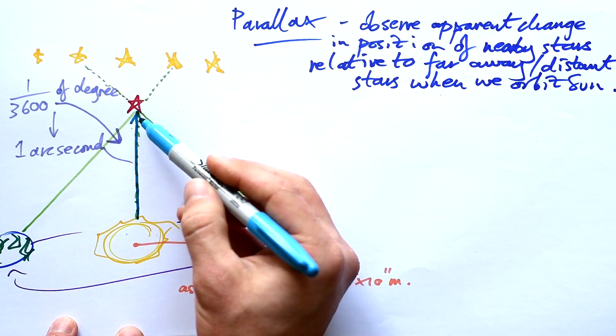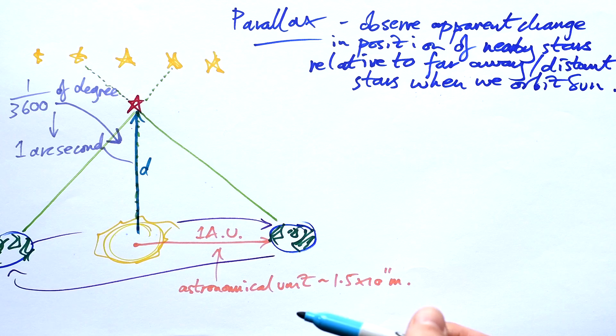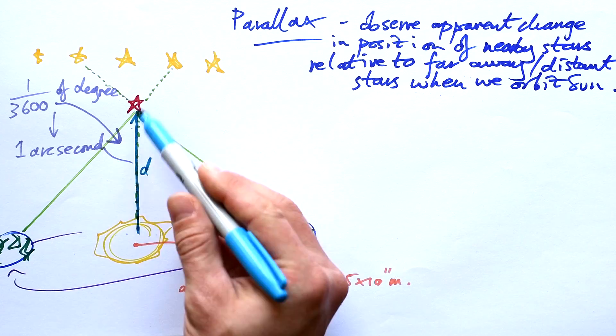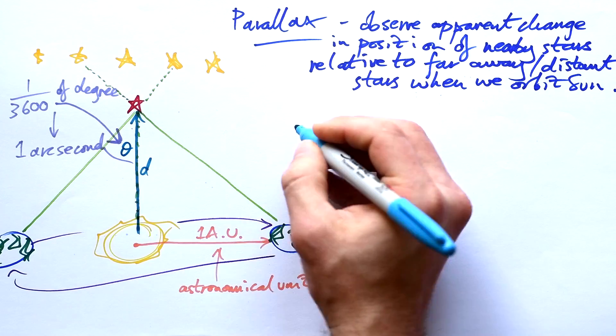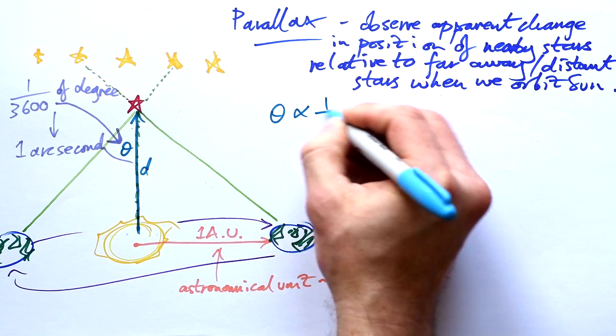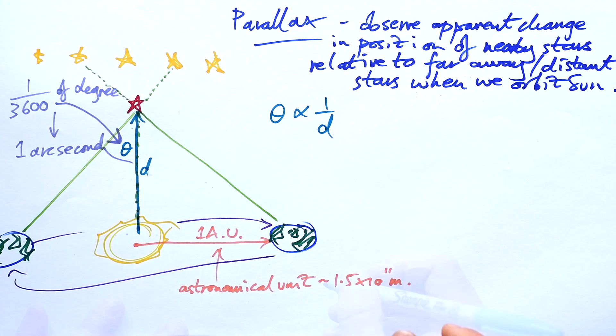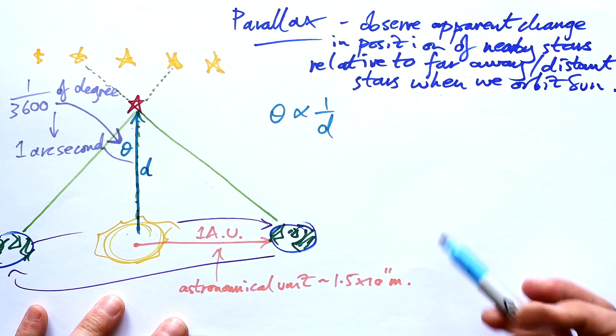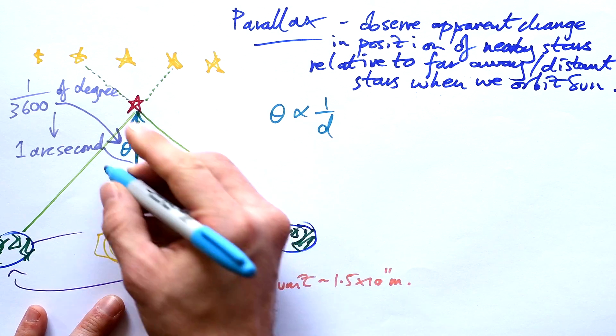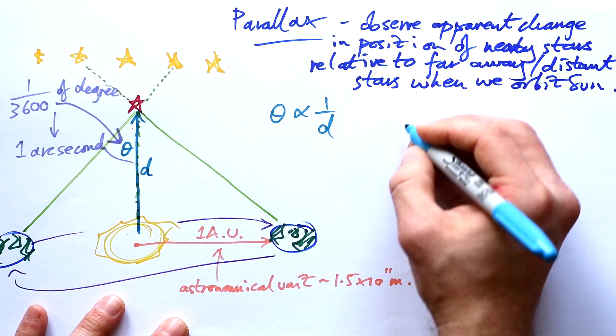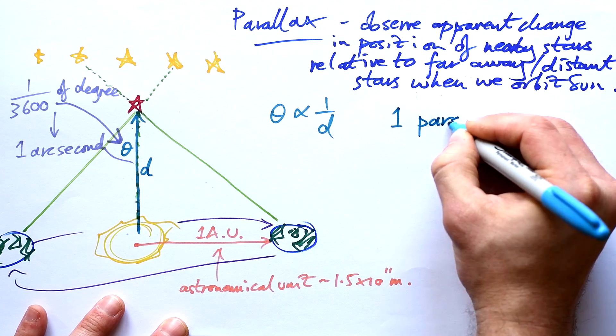So what can we say about the distance from the center of our orbit, that is the sun, compared to the angle? Well, the further away it is, the smaller this angle is. So we can say that the angle theta is inversely proportional to the distance. So because we're dealing with arbitrary units here, astronomical units and arc seconds, what we can say is let's call this distance here one parsec, short for parallax second.